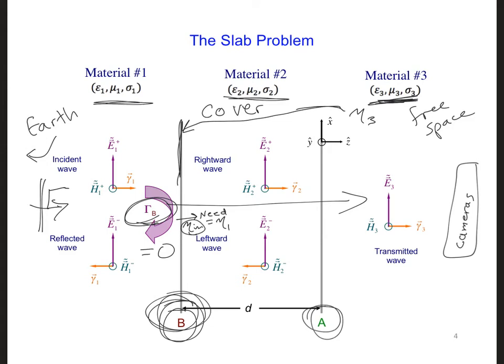we can find the total reflection coefficient at interface B would be eta B minus eta one over eta B plus eta one.